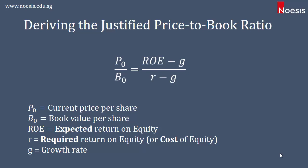Now we will look into deriving the justified price-to-book ratio, which is the return on equity minus the growth rate over cost of equity minus the growth rate.